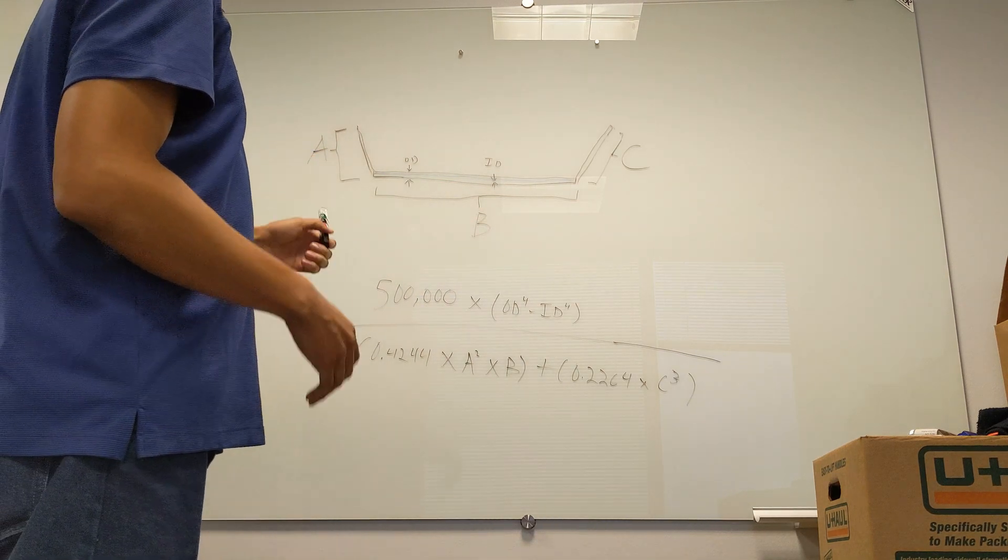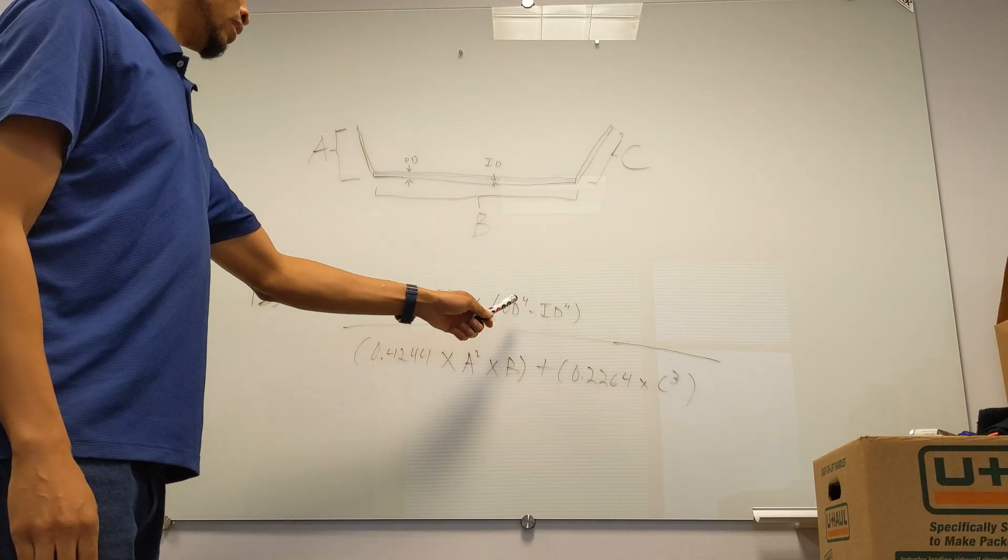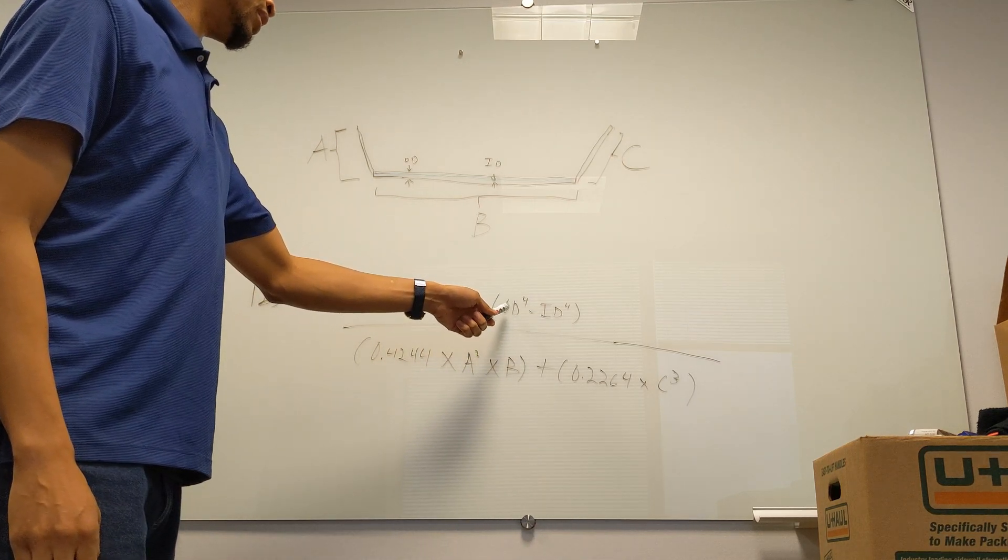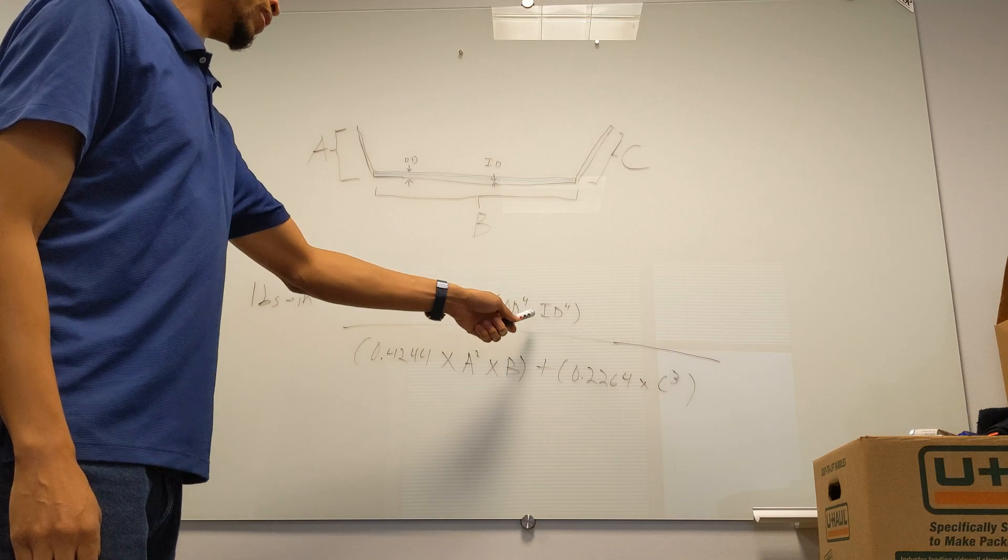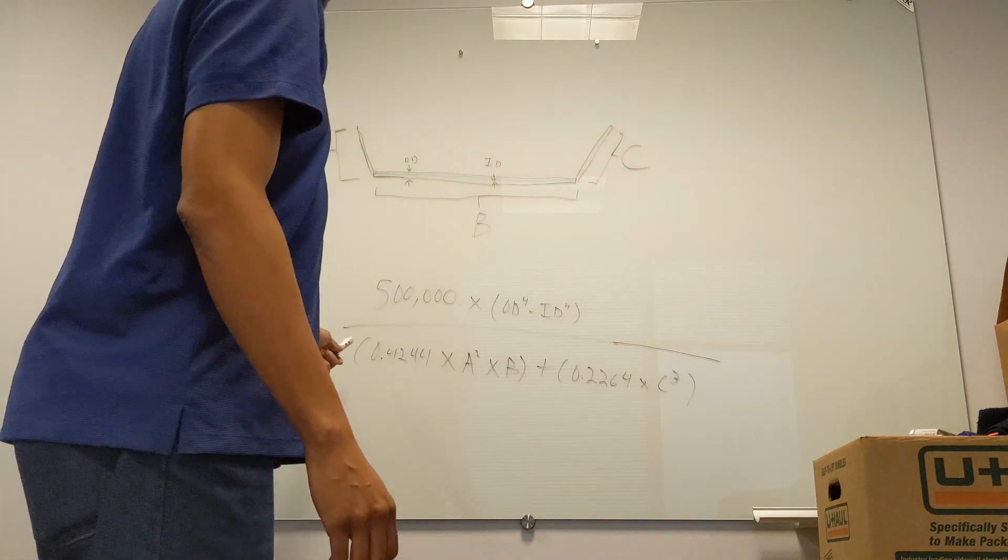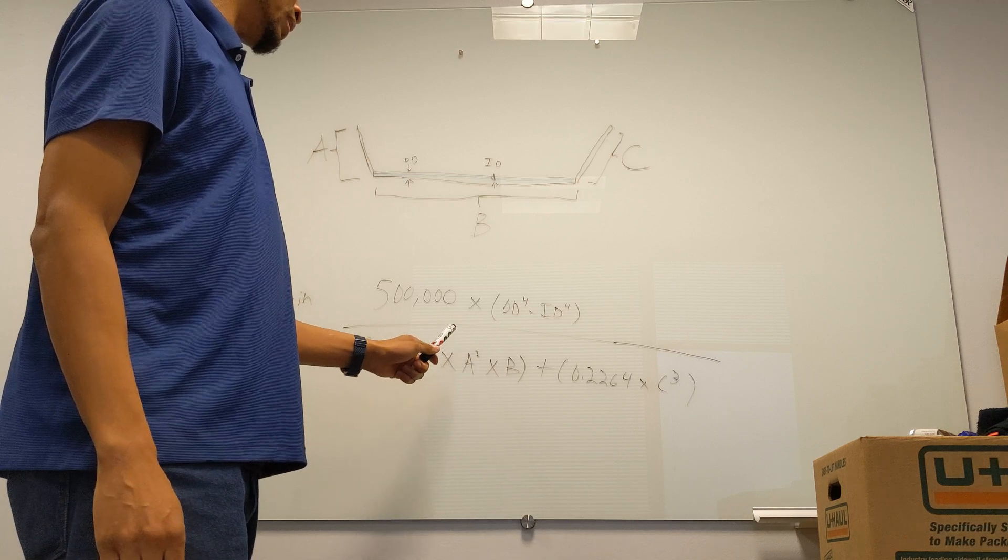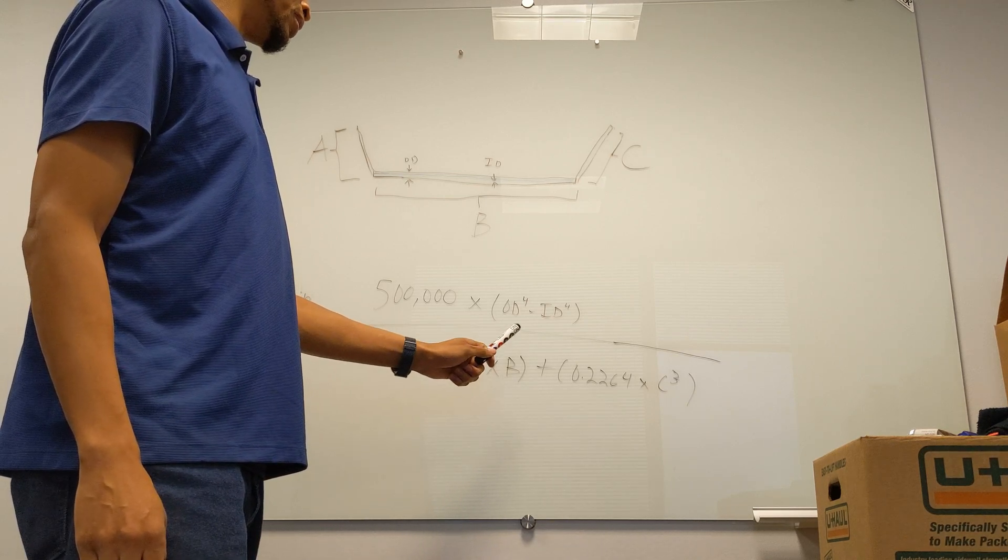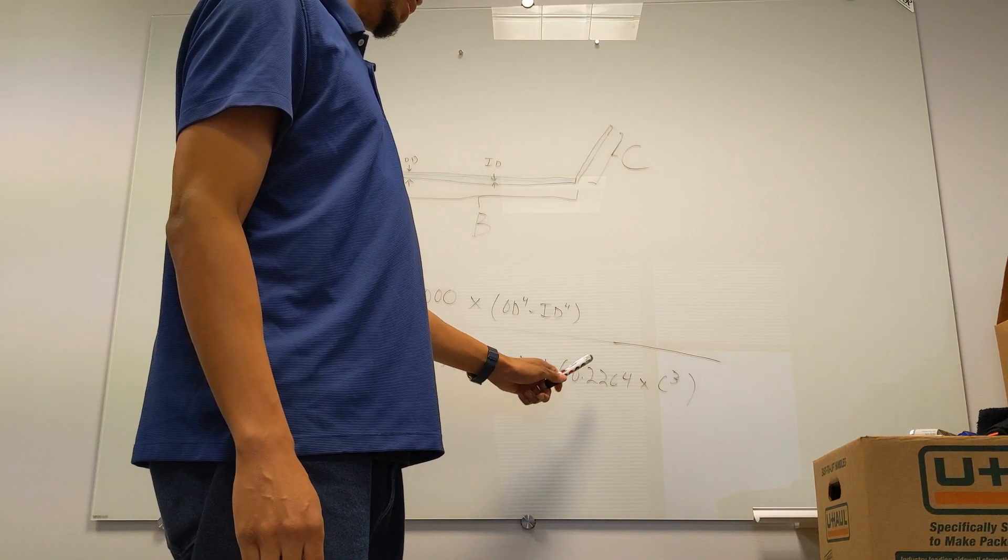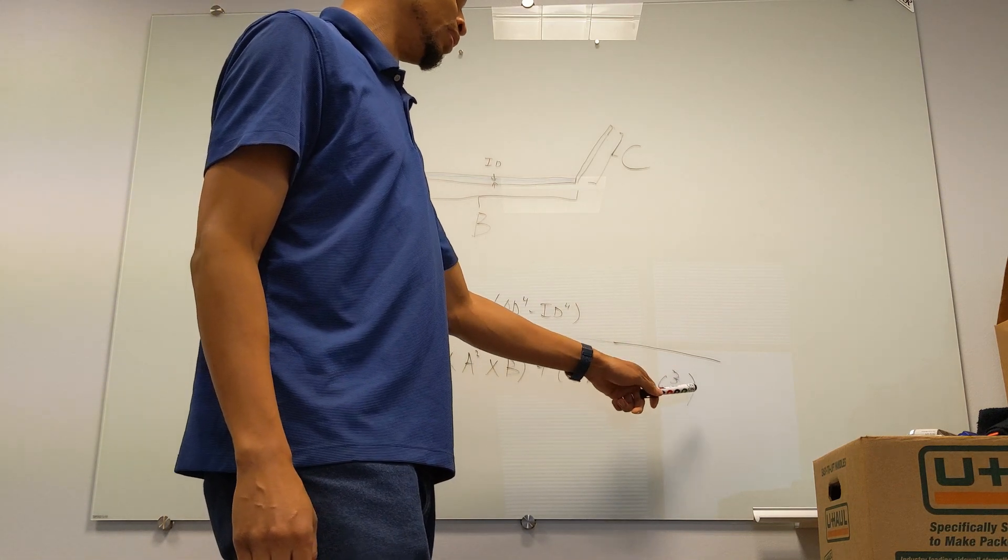If it's a solid bar, you'll use a zero. You'll get the outside diameter and then plug it into this formula right here. So this will be 500,000 times—this is in parentheses—outside diameter to the fourth power minus inside diameter to the fourth power, in parentheses. And then you'll divide by parentheses 0.4244 times A squared times B, in parentheses, plus parentheses 0.2264 times C cubed, end parentheses.